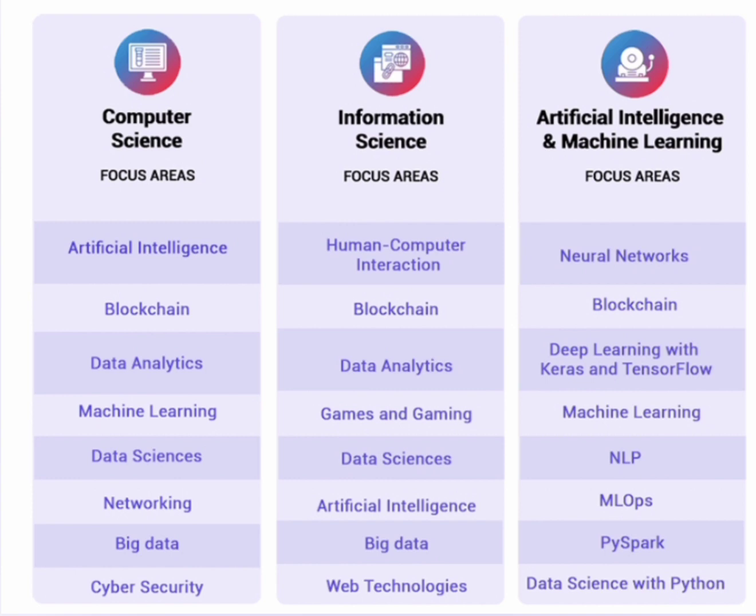So networking and cyber security are the two subjects that are in computer science but not in the other branches — that's why computer science is in highest demand. You can also study networking in ECE, and there is a separate cyber security specialization branch not covered in this video. In information science, there are two additional electives such as games and gaming, and web technologies is the specialty area.